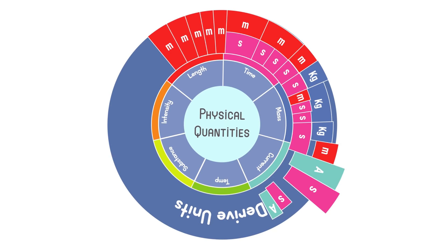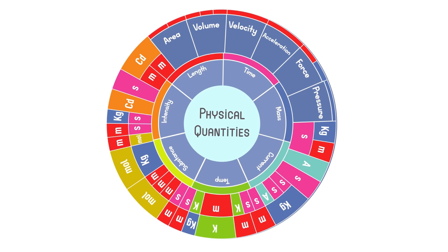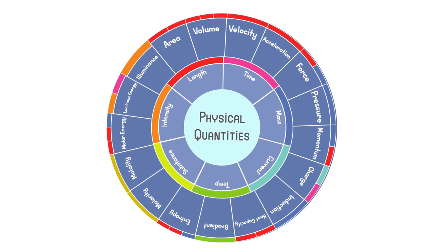Derived quantities, therefore, are those which are expressed in terms of base quantities. These quantities include area, volume, velocity, acceleration, force, pressure, momentum, electric charge, electric induction, etc.